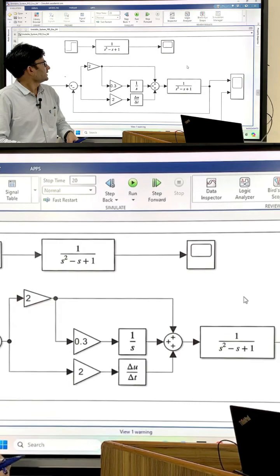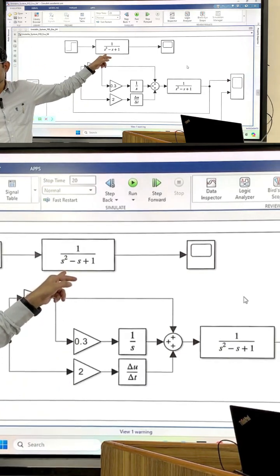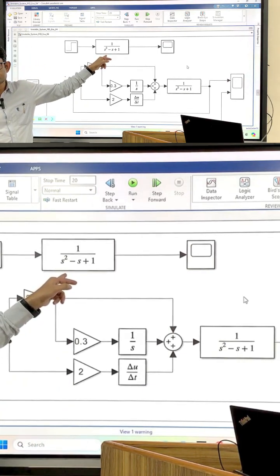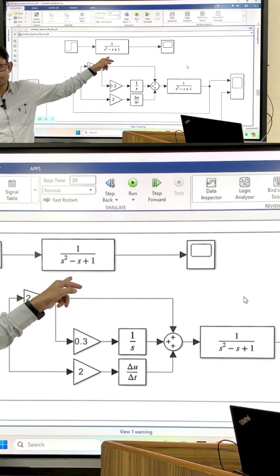So let's say I have put damping negative here, minus 1, minus 0.5.